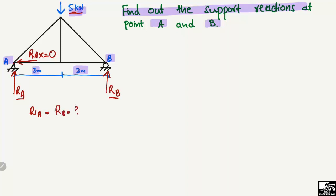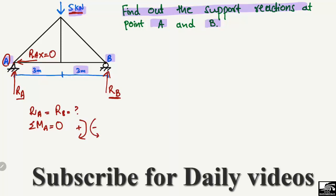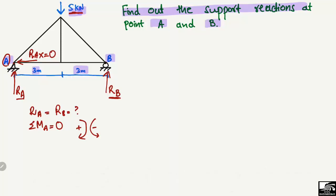To find the unknown support reactions RA and RB, we use equilibrium equations. We take the summation of moments at point A equal to zero. The first step is to establish a sign assumption: clockwise moments are taken as positive and anti-clockwise moments are taken as negative.